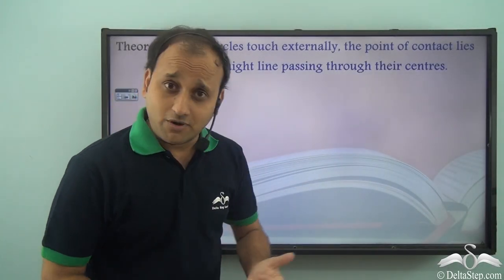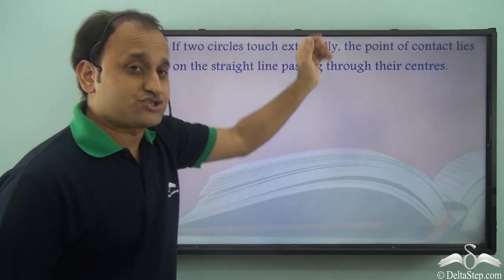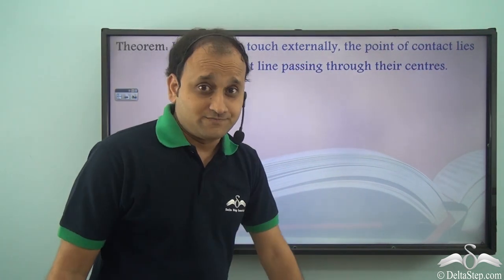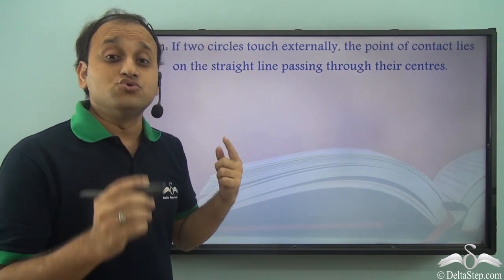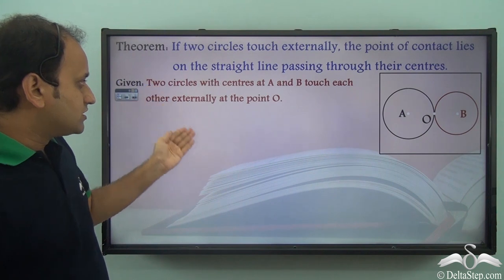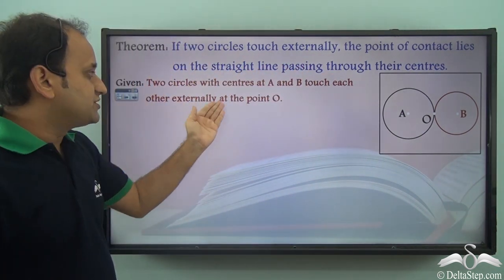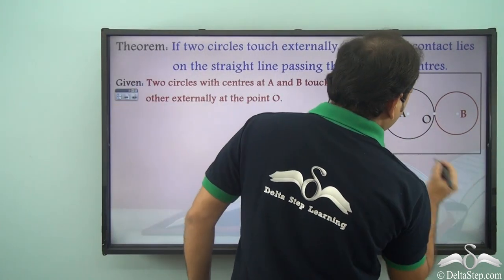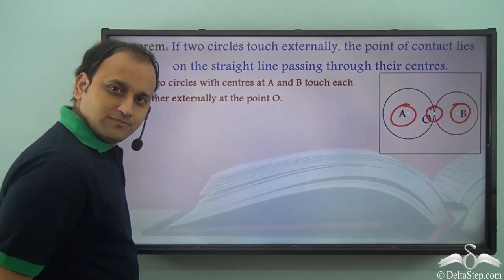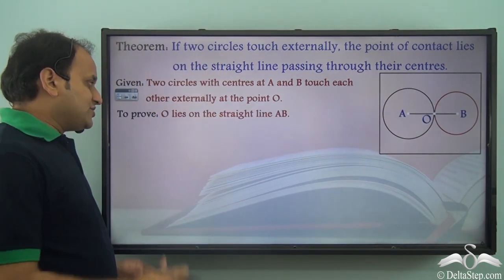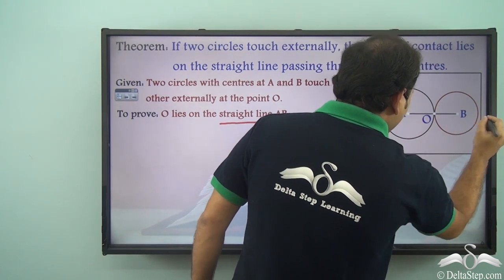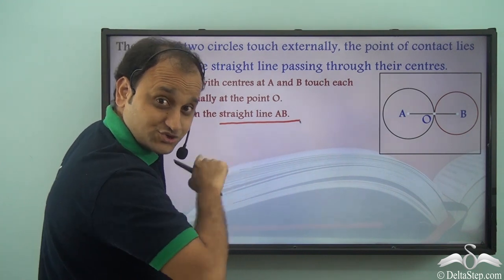We have a very important theorem of circles: if two circles touch externally, the point of contact lies on the straight line passing through the centers. Given: two circles with centers A and B touch each other externally at point O. We need to prove that O lies on the straight line AB.